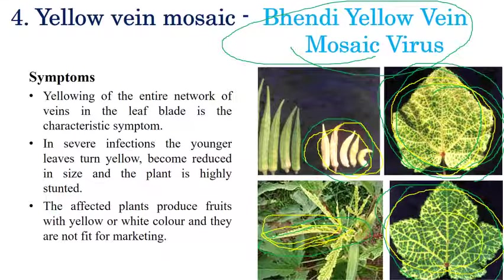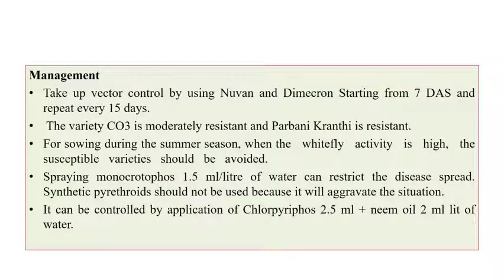For management of yellow vein mosaic, control of the vector using insecticides such as nuvane and dimethoate is recommended, with spraying at 7-day and 15-day intervals. Moderately resistant varieties such as Co3 and Parbhani Kranti can also be recommended. Sowing during the summer season when whitefly activity is high should be avoided, and susceptible varieties should not be used during high whitefly activity periods.